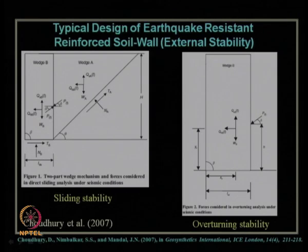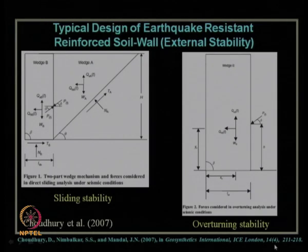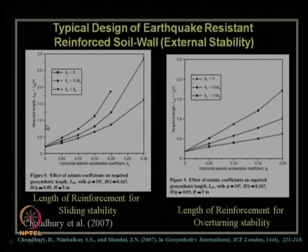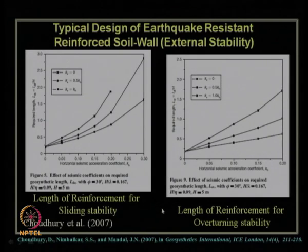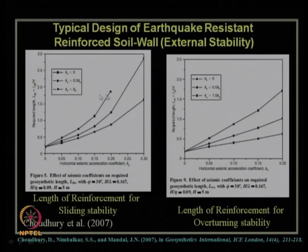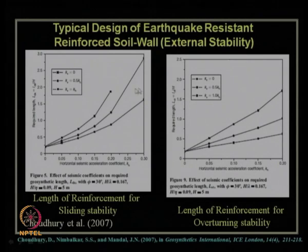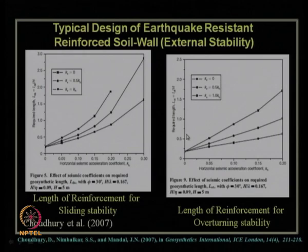The entire analysis is available in Choudhury, Nimbalkar and Mandel 2007 in Geosynthetics International, Institute of Civil Engineers London. The results show the required length of reinforcement for direct sliding stability and overturning stability for particular values of k_h and k_v. When designing a reinforced soil wall, the reinforcement strength is provided per the internal stability criteria, and the length is governed by whichever of the three criteria — external sliding, external overturning, and internal pullout — gives the maximum length.